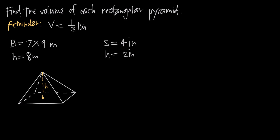For example, if I'm told that the base is seven meters by nine meters, I could label this as seven meters and this as nine meters, and I know that the height is eight meters.